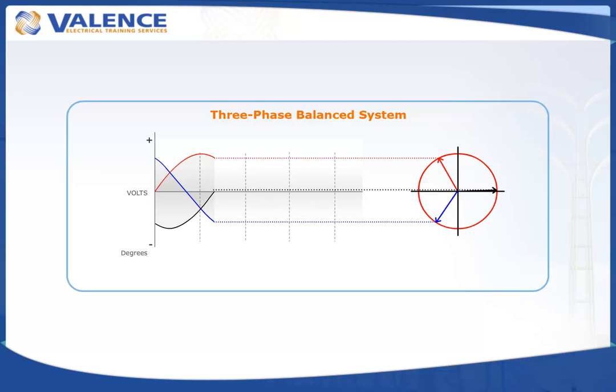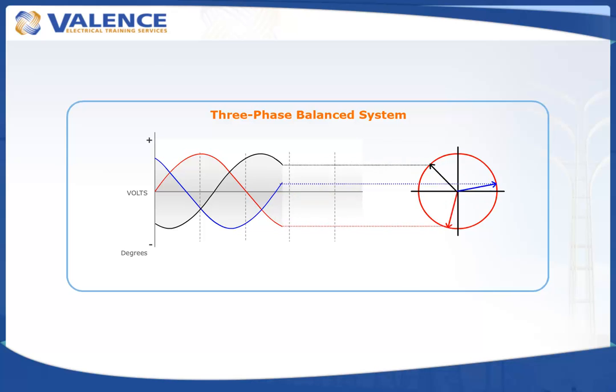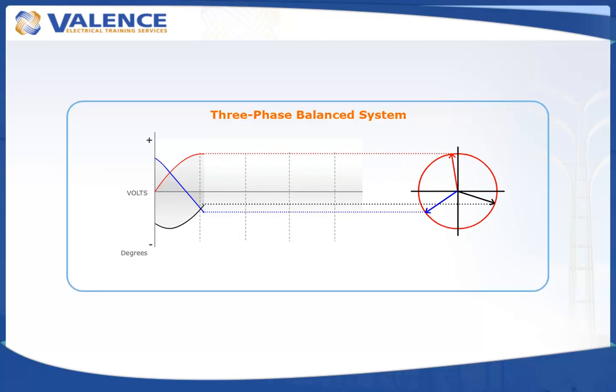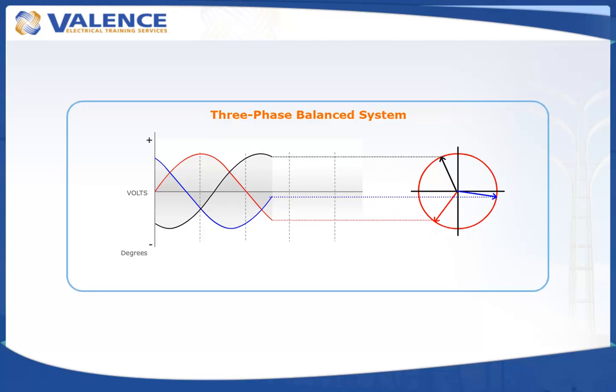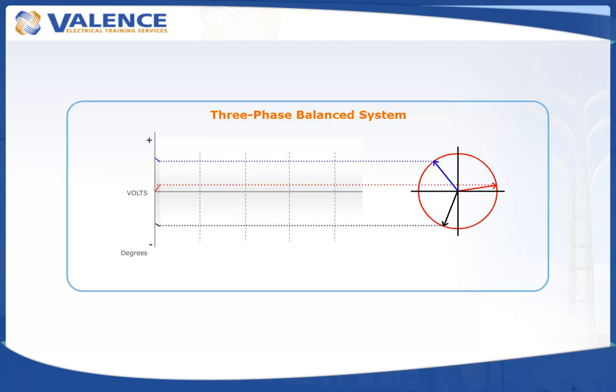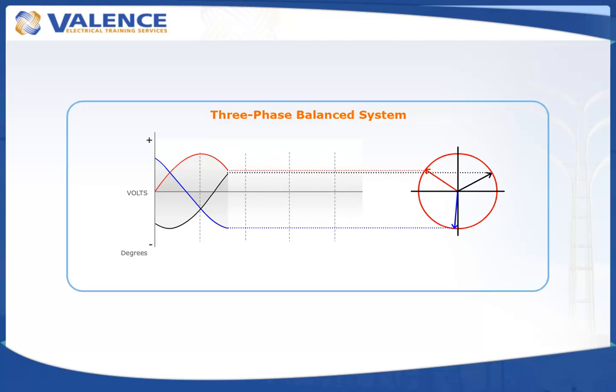Phasors are direct representations of waveforms and are constantly moving, as shown here, where the waveform is on the left-hand side and the corresponding phasor is on the right-hand side.